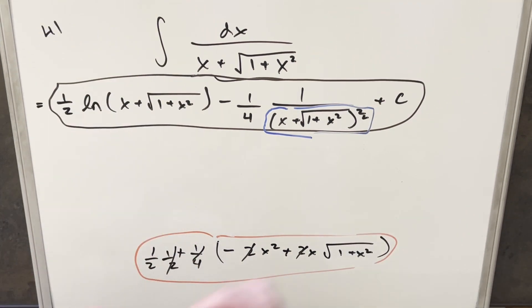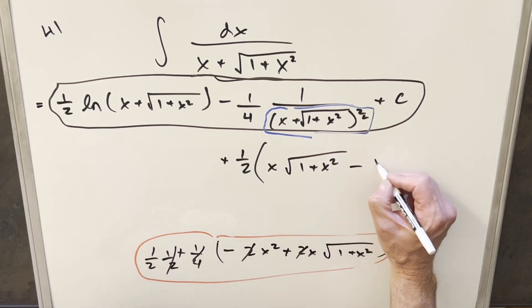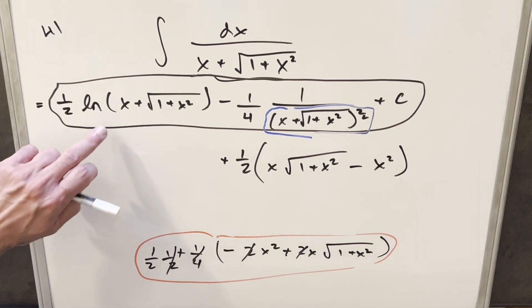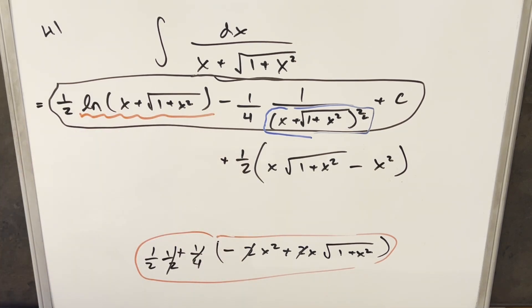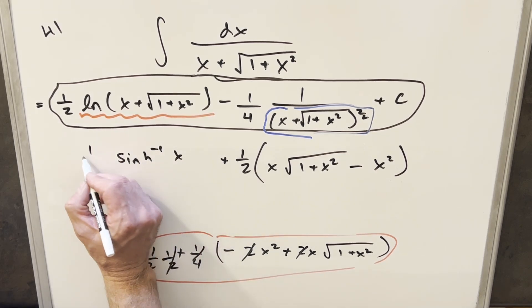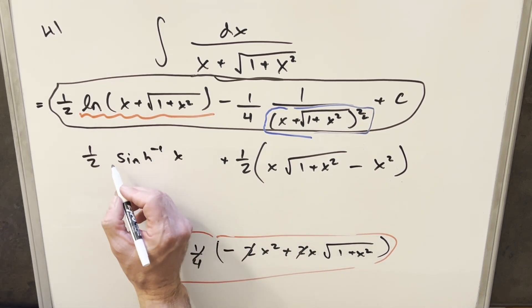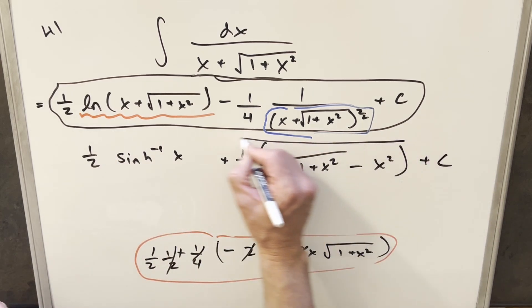So taking this and plugging it back in here, now I'm going to write this as plus 1 half. I can rearrange the order just to get the plus sign in front. So we can write this as x square root 1 plus x squared minus x squared. And then we just need to bring this stuff down. But one thing I want to notice, this right here, this thing right here, this is actually the same thing as inverse sinh. So I can actually write this piece as inverse sinh of x. We have the 1 half in front. I can factor out the 1 half, but I think I'm going to just leave it like this, add a plus C, and that's it.